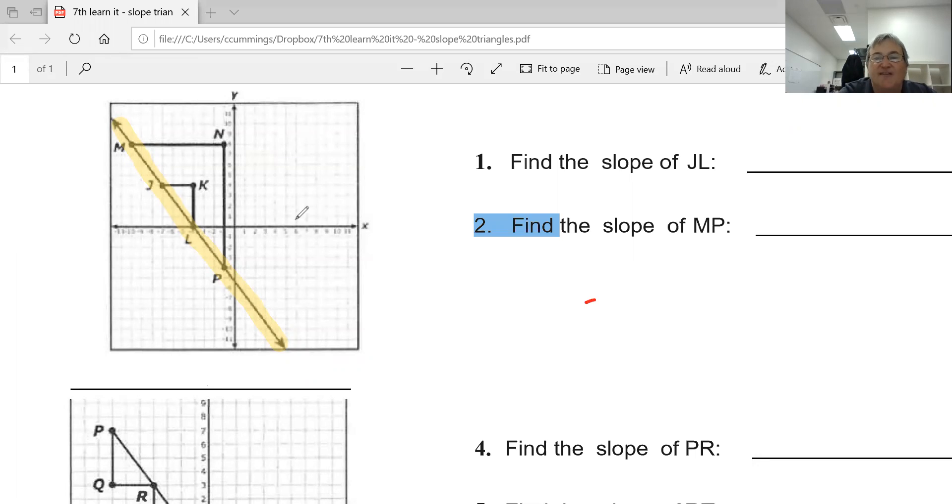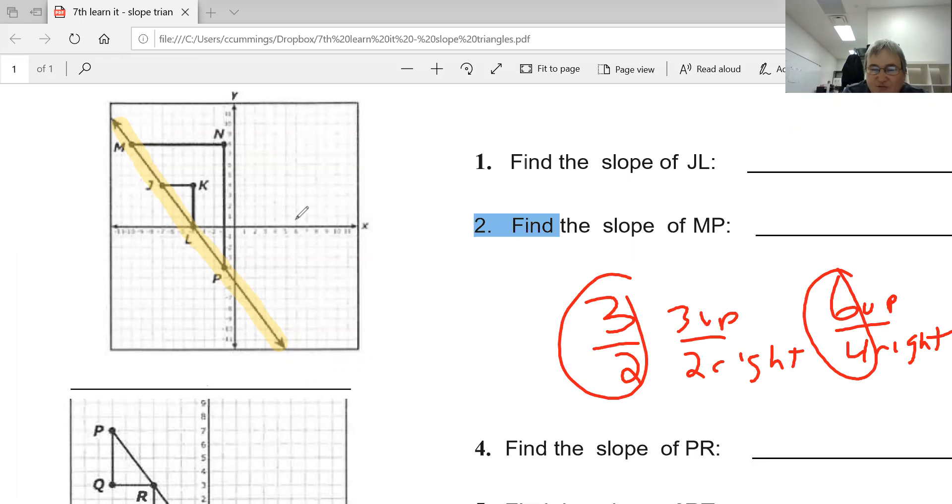But if I have 3 over 2, which means 3 up 2 right, I can also go 6 up 4 right, and I'll still land on the line because of this and this being fractions that when you simplify they're equal. And this is what it's going to demonstrate.